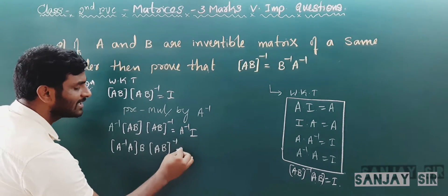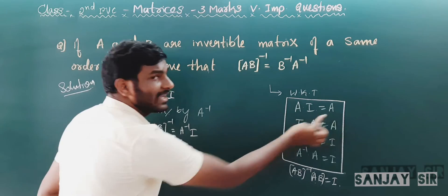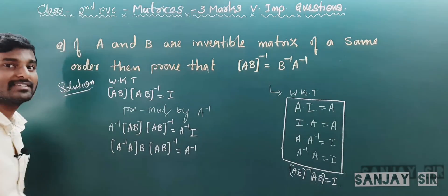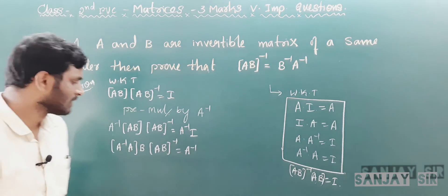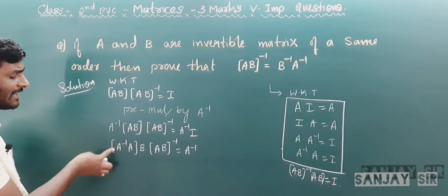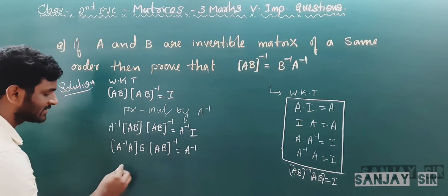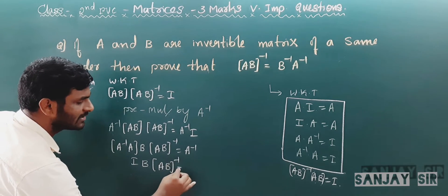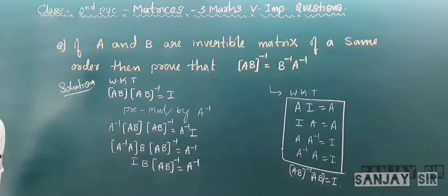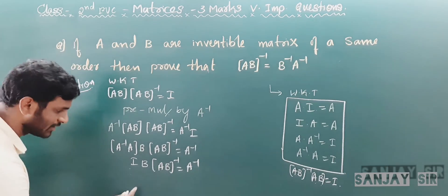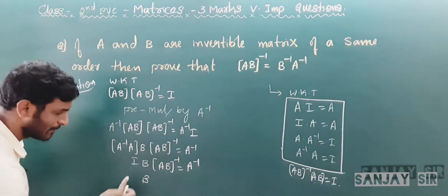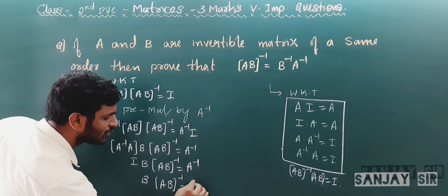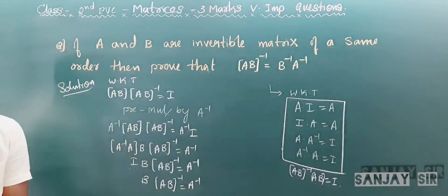Don't change anything else. What is A · I? It is A. What is A⁻¹ · I? That is A⁻¹. And what is A⁻¹ · A? That is I. So I · B · (AB)⁻¹ = A⁻¹, and what is I · B? That is B. So B · (AB)⁻¹ = A⁻¹.